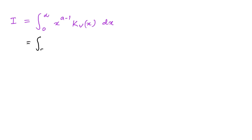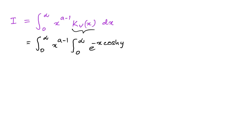To begin, let I equal the integral from 0 to infinity of x to the a minus 1 times the modified Bessel function. We use the integral representation of the modified Bessel function: the integral from 0 to infinity of e to the minus x·cosh(y) times cosh(vy) dy.